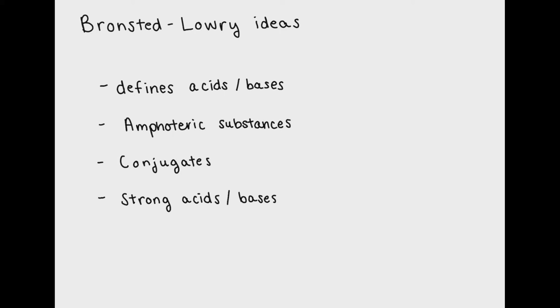Bronsted-Lowry theory defines acids and bases, also defines amphoteric substances, conjugate bases, and strong acids and bases. It's important to understand Bronsted-Lowry's theory of acids and bases in combination with Arrhenius acids and bases to get a complete picture of what an acid and base does in solution.